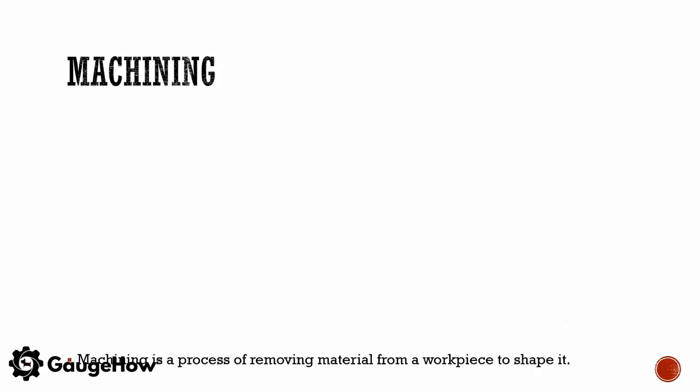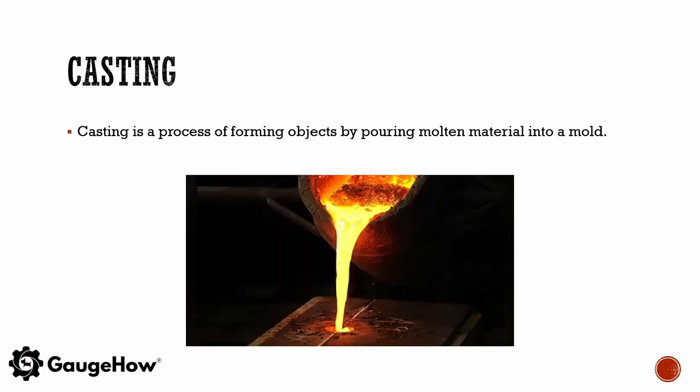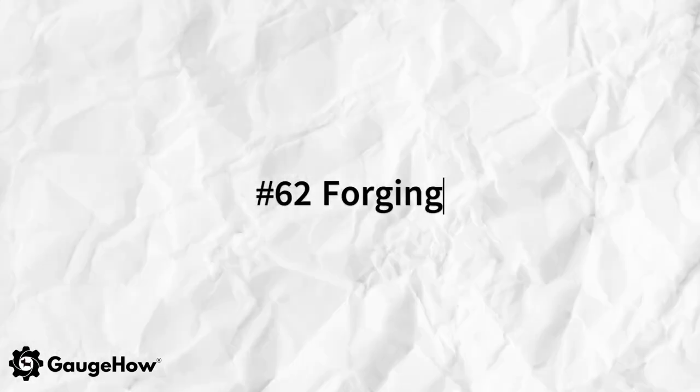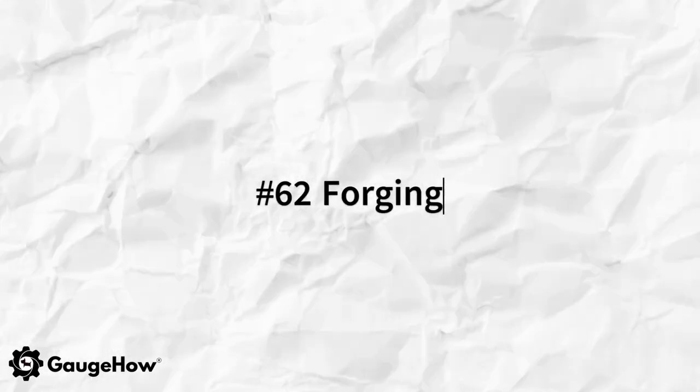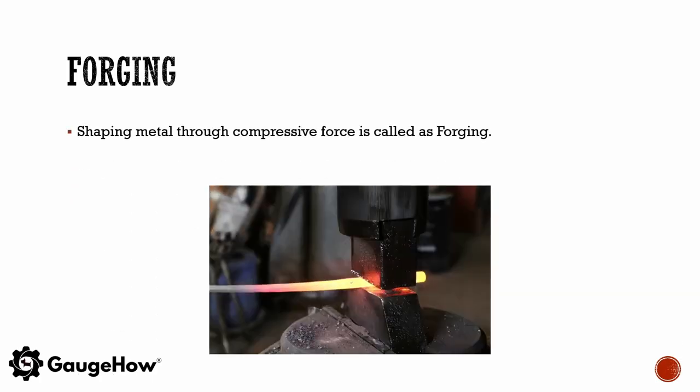Machining is a process of removing material from a workpiece to shape it. Casting is a process of forming objects by pouring molten material into a mould. Shaping metal through compressive force is called forging.